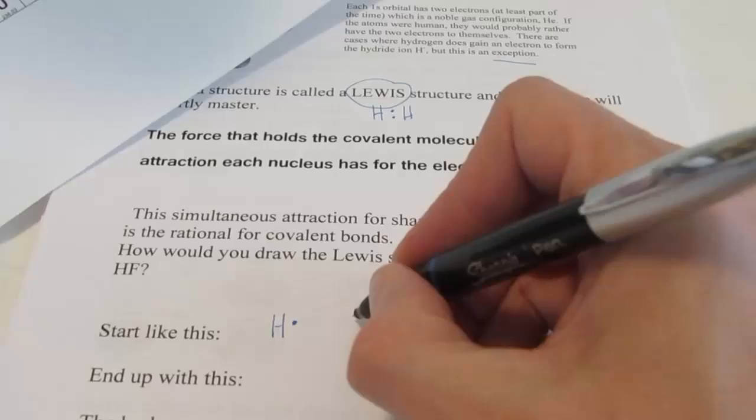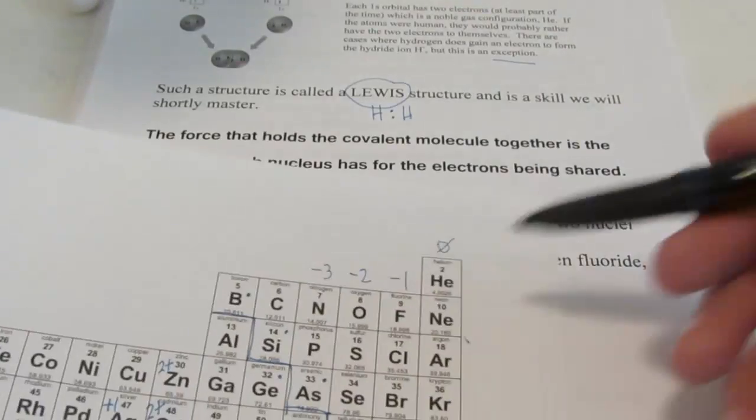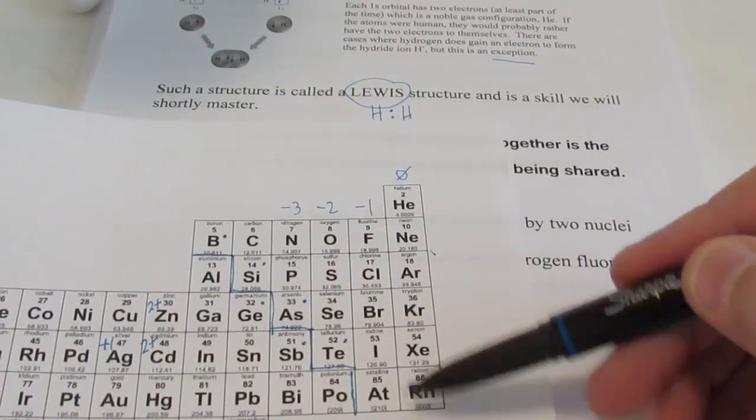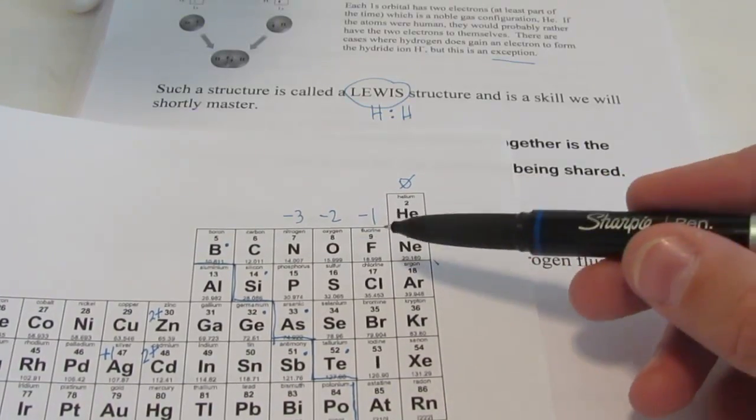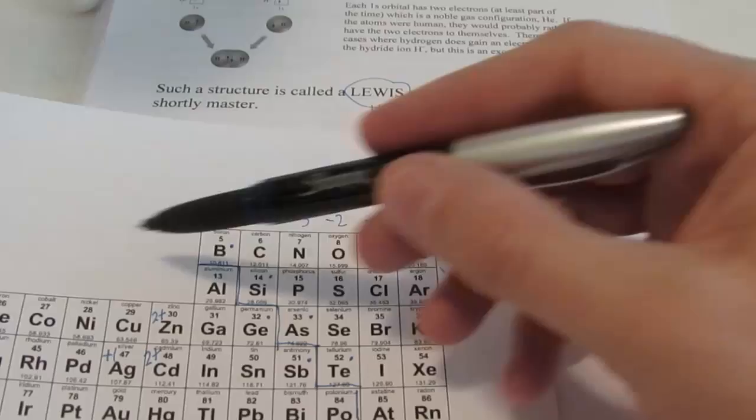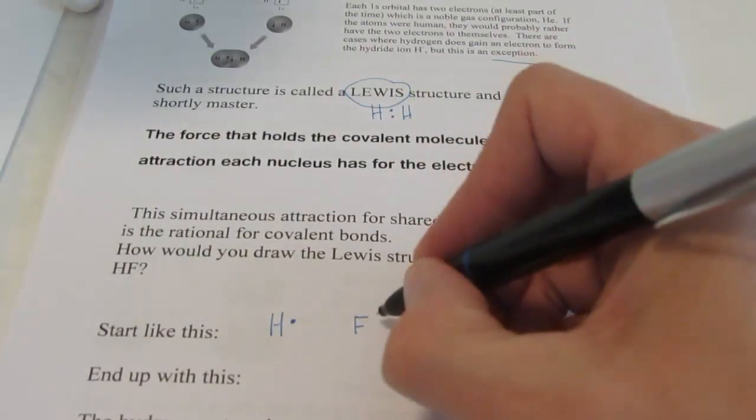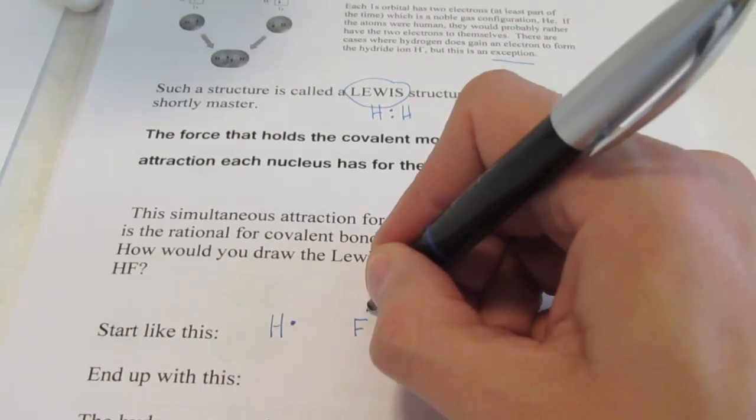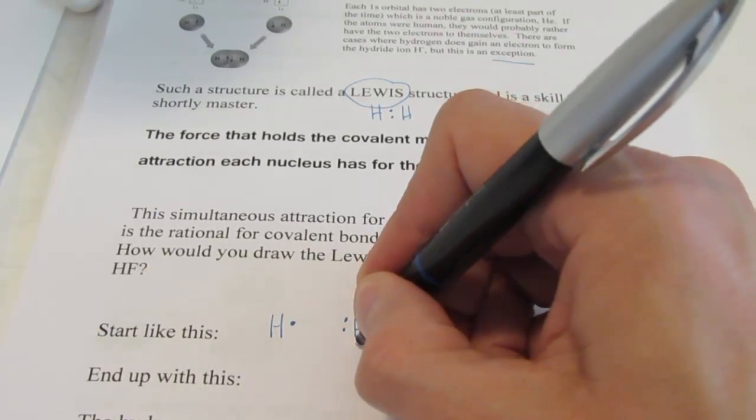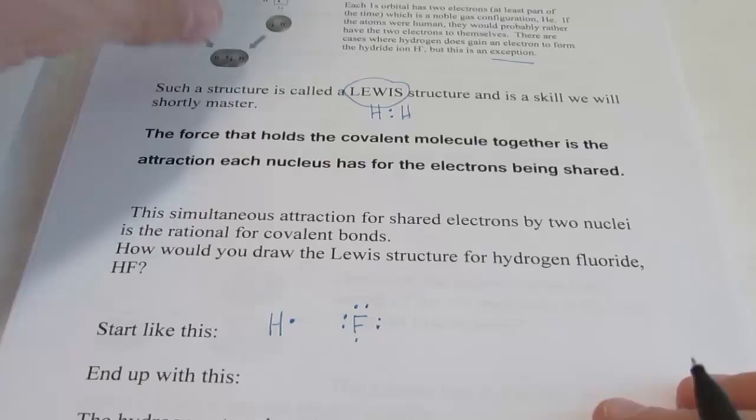The force that holds this covalent molecule together is the attraction that each nucleus has for the electrons being shared. This simultaneous attraction for shared electrons by two nuclei is the rationale for the covalent bond. Now let's do another one. How would you draw the Lewis structure for hydrogen fluoride?